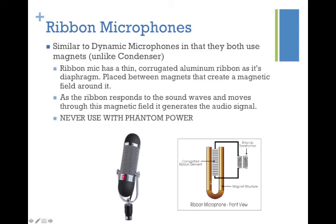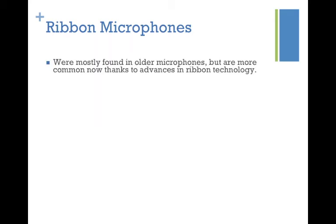Never use phantom power with ribbon mics. The ribbon is very thin and delicate, perfectly engineered to pick up sound without power being added to it. Adding phantom power can fry the very delicate wires connected to the ribbon, break the ribbon, or tear it apart — it's really dangerous. Best practice: if you're using different types of microphones, always keep phantom power off, then turn it on only when you need it with a condenser microphone. Dynamic microphones don't need to worry about phantom power — it won't help them but it won't hurt them either.